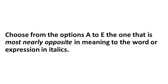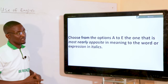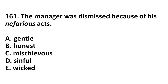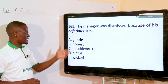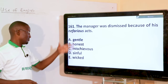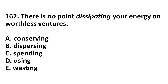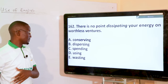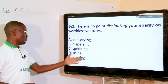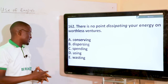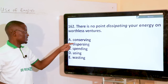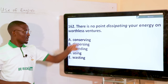Choose from options A to E the one that most nearly opposes in meaning to the word in italics. The manager was dismissed because of his nefarious acts — nefarious means questionable acts, and the opposite is 'honest,' option B. There is no point dissipating your energy on worthless ventures — dissipating means using up or wasting. The opposite is 'conserving' — conserving is storing or saving more of the energy.